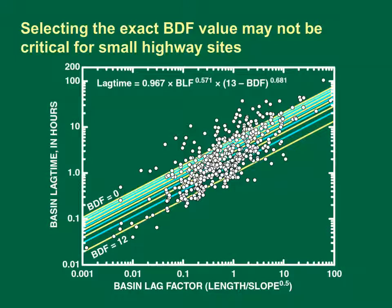Selecting the exact Basin Development Factor value may not be critical for small highway sites. This scatter plot diagram shows basin lag time data from 493 sites across the United States and regression equations developed using the basin lag time, the basin lag factor (BLF), and the Basin Development Factor (BDF) measured at these sites. Highway sites tend to have small basin lag factor values, so the difference among lag times across the full range of BDF values is on the order of six minutes to one hour. We should try to derive the most accurate and defensible BDF estimate as possible, but the difference between adjacent BDF values probably is not critical for many small highway sites.